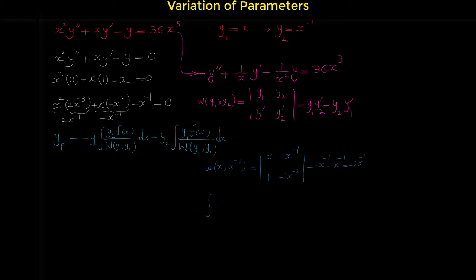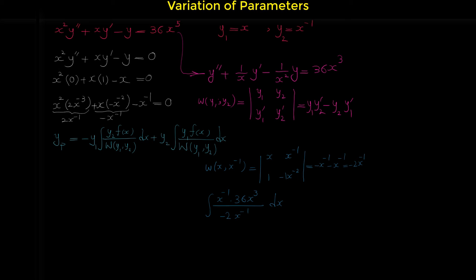Now let's calculate the two integrals. The first integral is the integral of y2 times f(x) over the Wronskian dx. Y2 is x to the negative one, f(x) is 36x cubed, and the Wronskian is negative 2x to the negative one. x to the negative one in the numerator and x to the negative one in the denominator cancel each other, and 36 over negative 2 is negative 18. So we have negative 18 times the integral of x cubed dx, which equals negative 18 times x to the fourth over 4, giving negative 9x to the fourth over 2. Do not add the constant c.